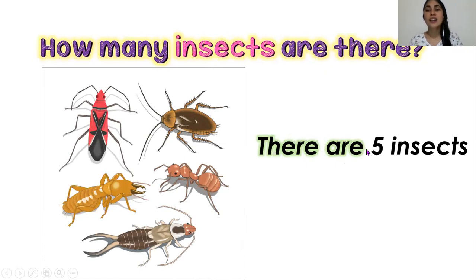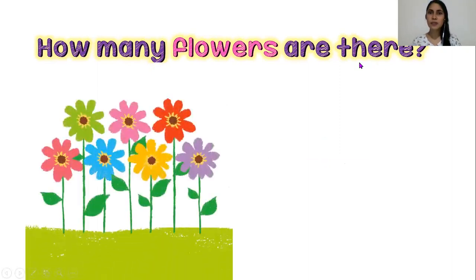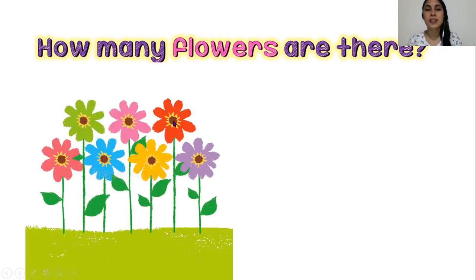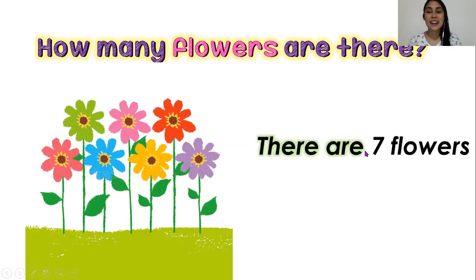There are five insects. Another example: how many flowers are there? Let's count: one, two, three, four, five, six, seven. Yes, there are seven flowers.